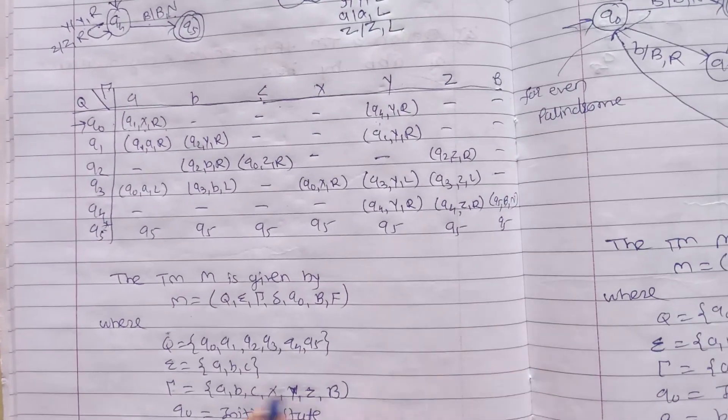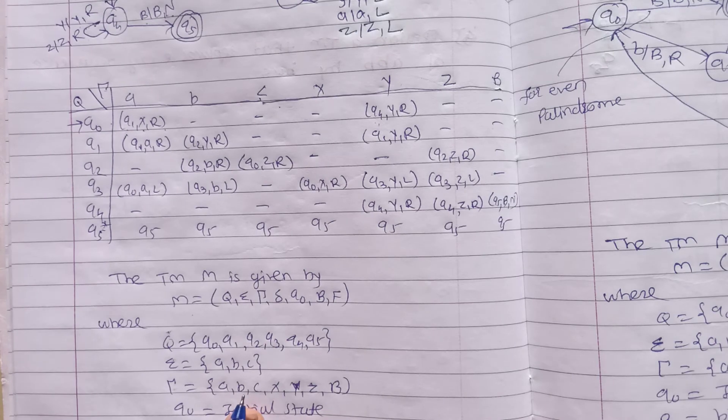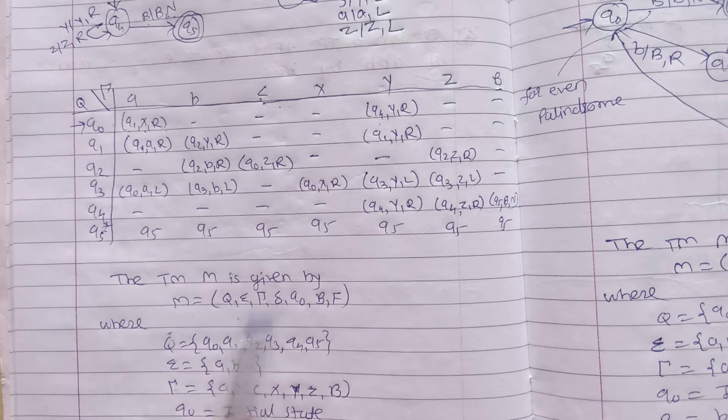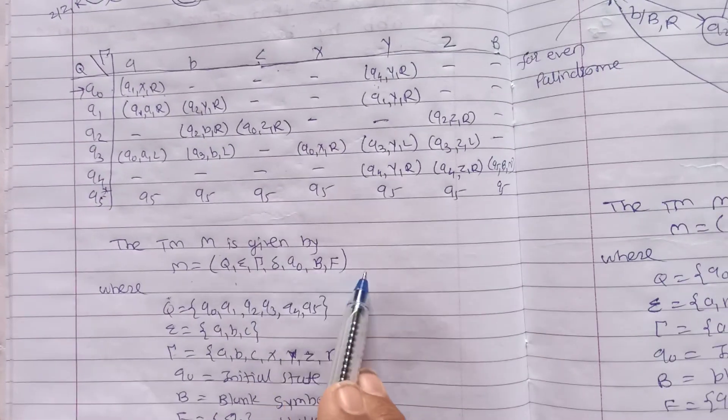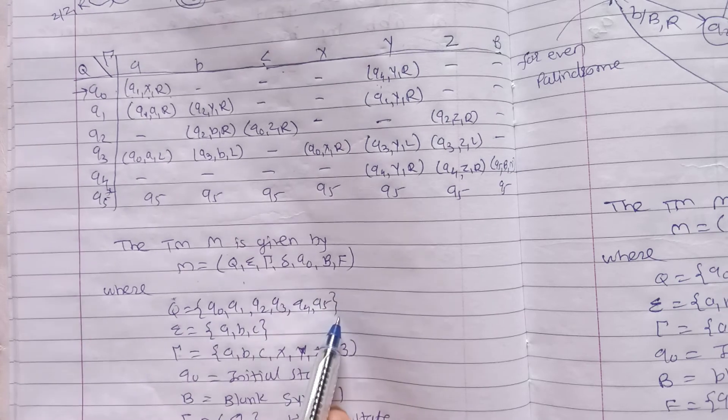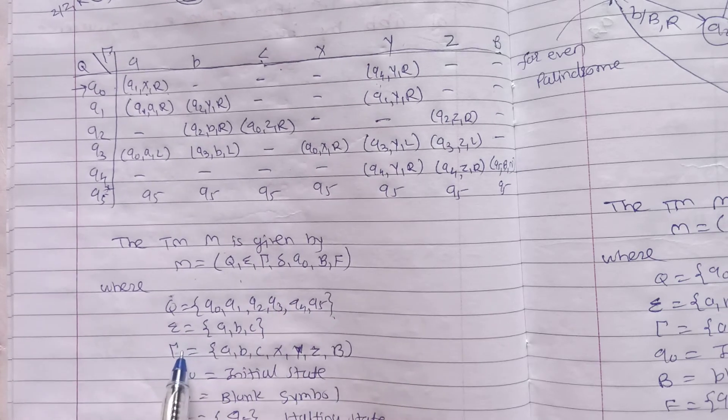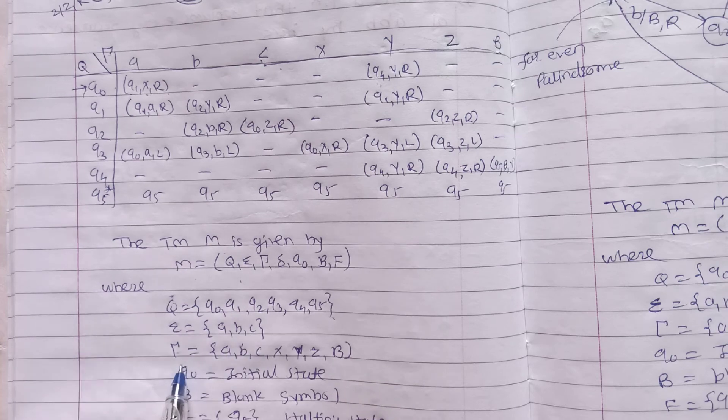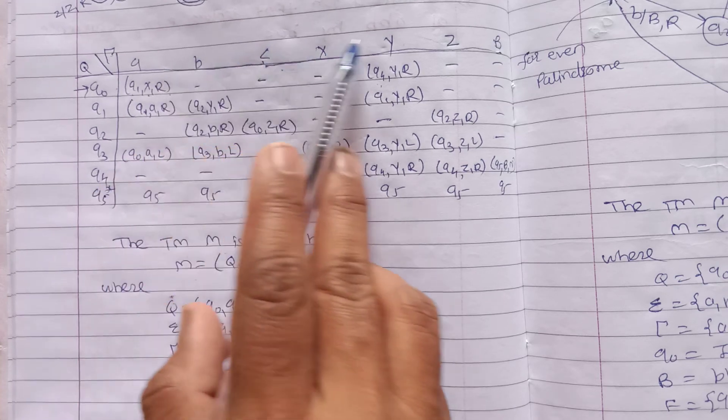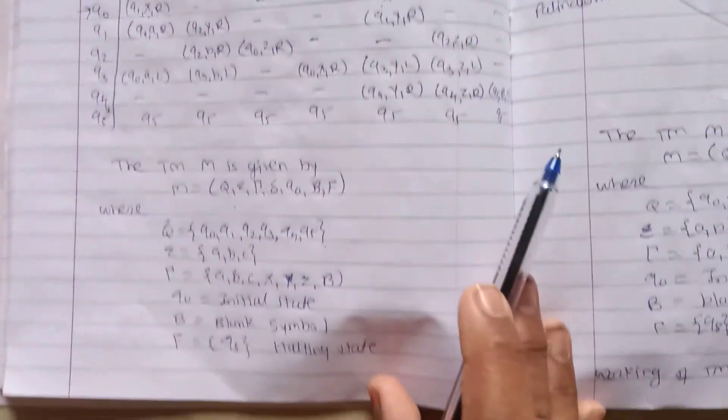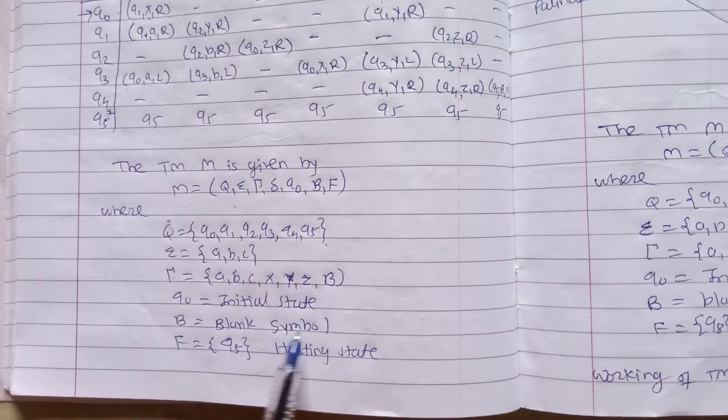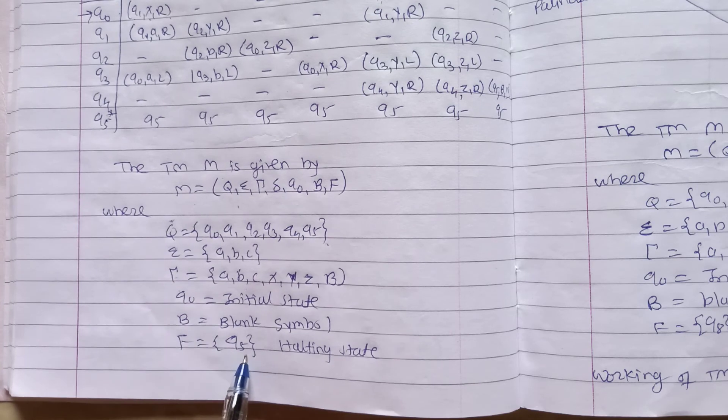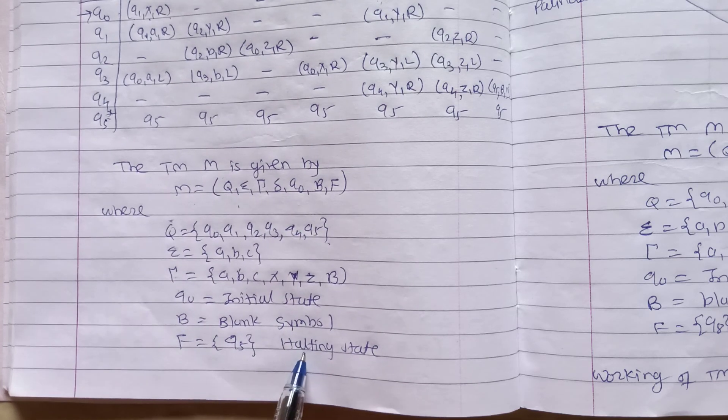Next is the Turing machine tuples. The Turing machine M is given by M equals (Q, Σ, Γ, δ, q0, B, F), where Q equals all the states q0 to q5, Σ equals input symbols a, b, c, Γ equals tape elements a, b, c, x, y, z, blank, q0 is the initial state, B is the blank symbol, F equals final state q5 which is called the halting state.